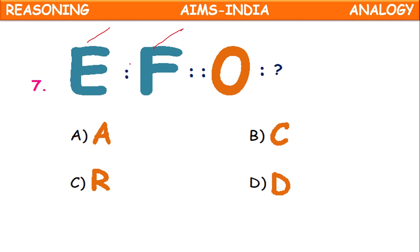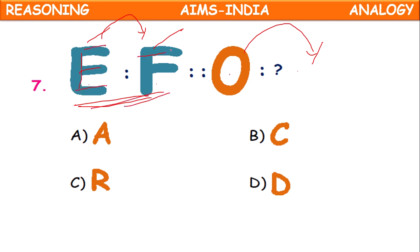E is related to F. Then O is related to what? Immediately after E comes F, but there is no P option. Observing more carefully: E and F are made with straight lines. O is made with a curved line. In the same way, C is made with only a curved line. Option C is the correct answer.